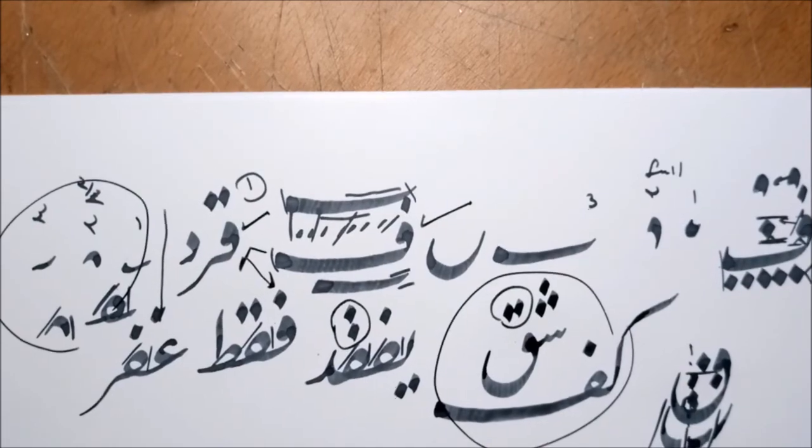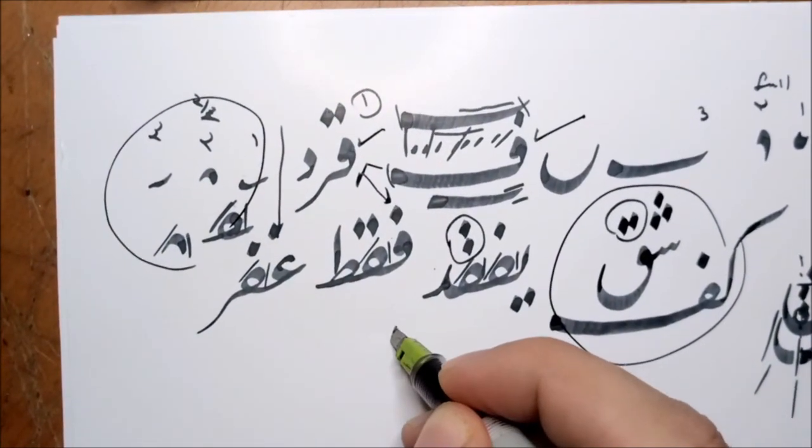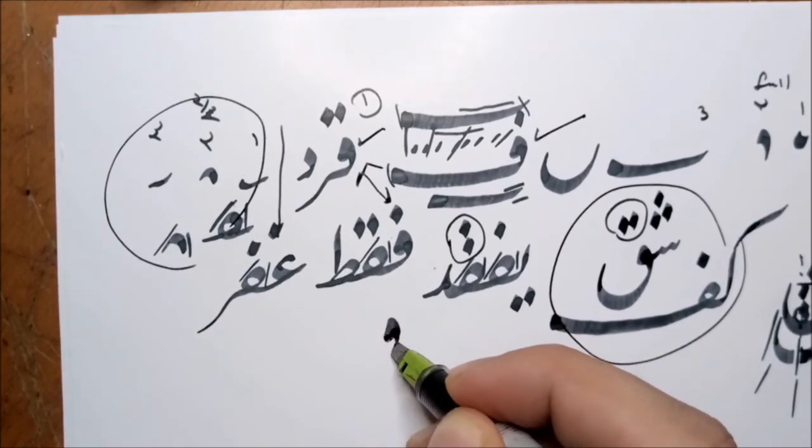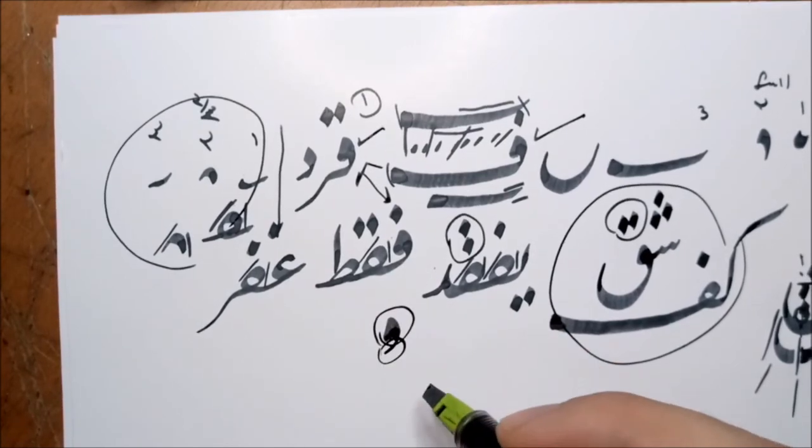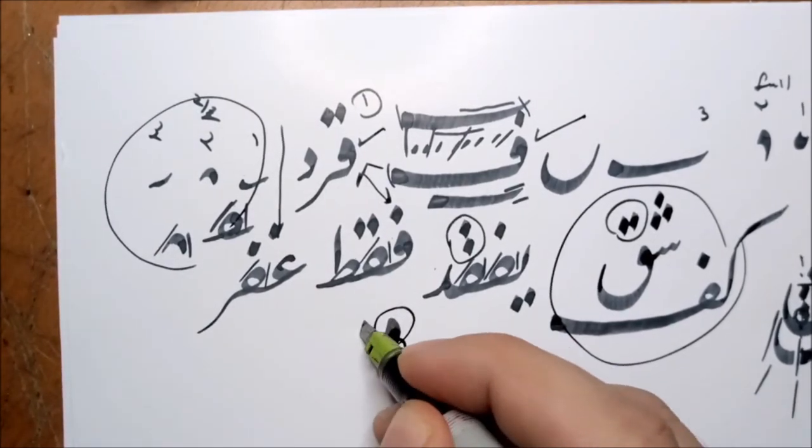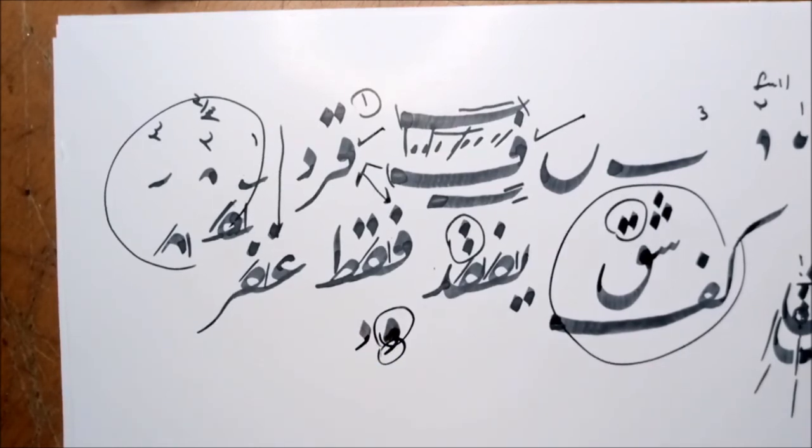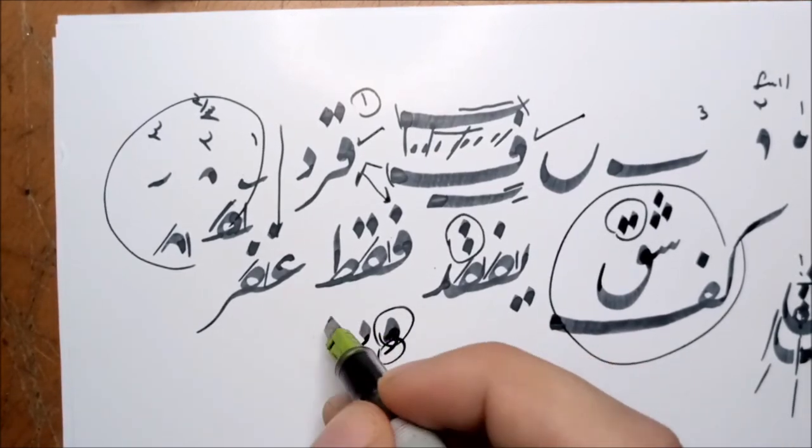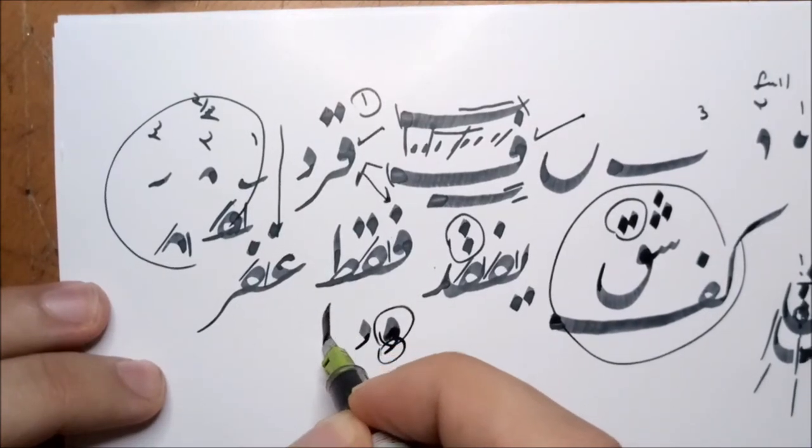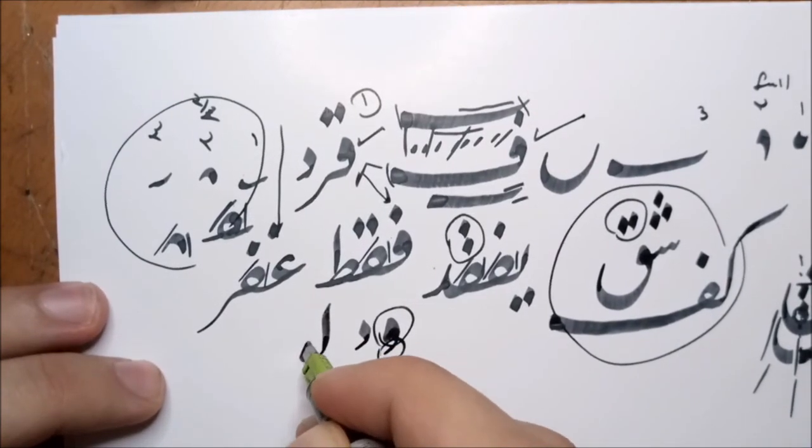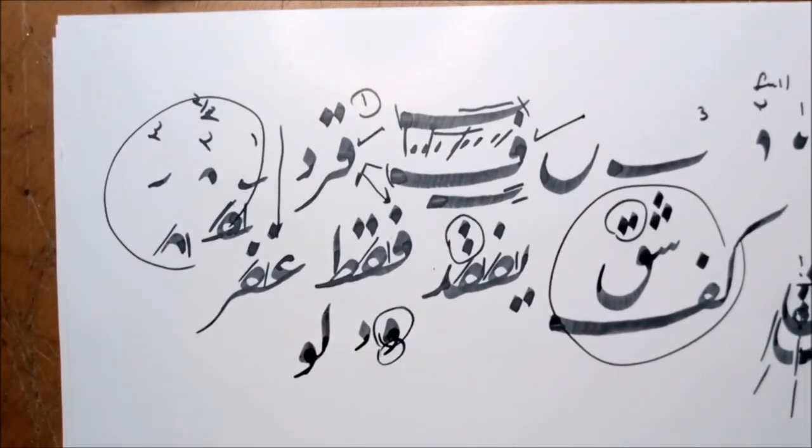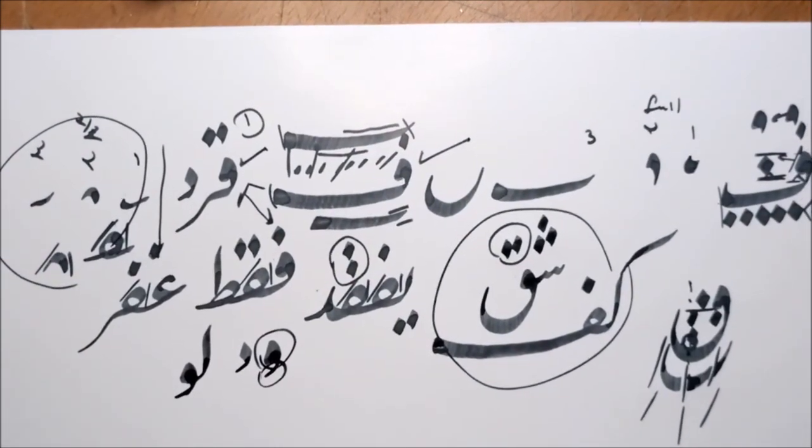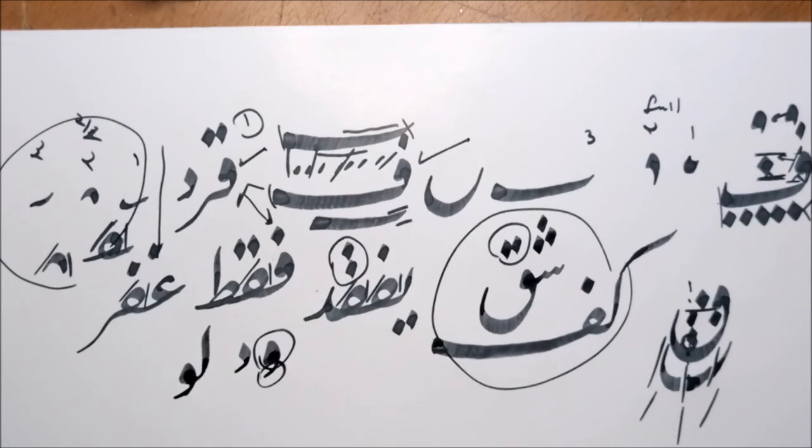There's also another letter that is similar to them which is the Waw. Use the same moves but finally you add a Ra. And for the Waw the head looks really big, the tail is really small just like the Dal. Also it's the same thing if you were to connect it, for example Low. So here we go.